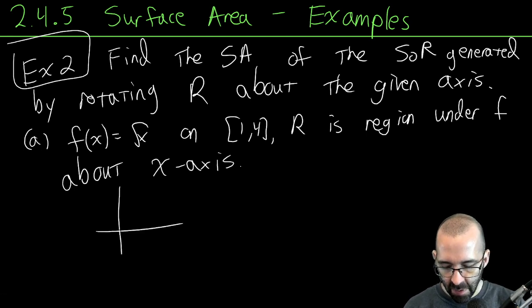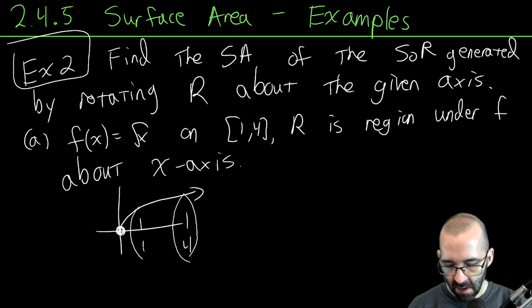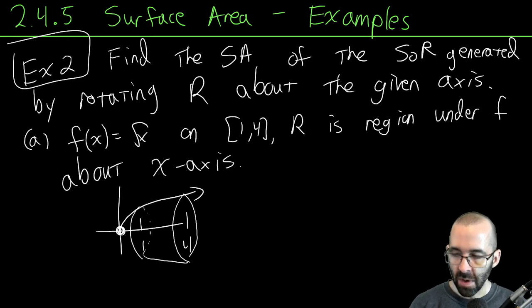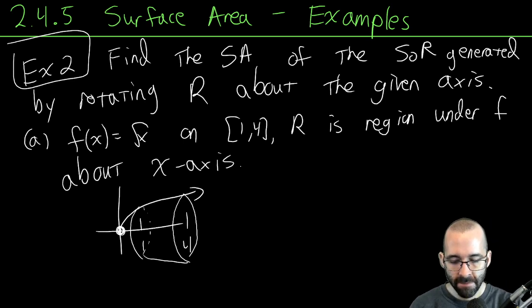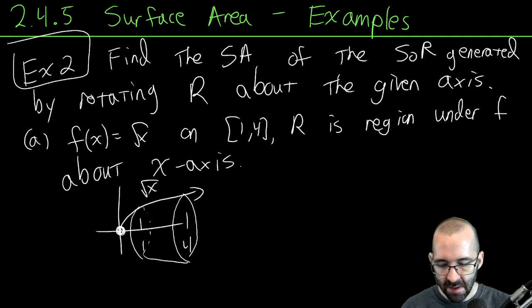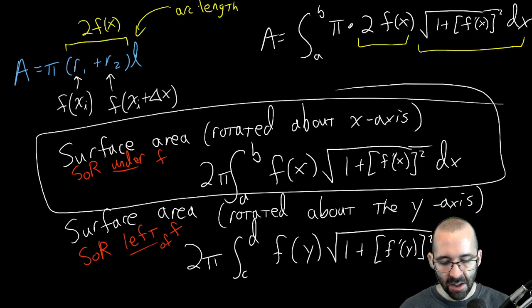Part A: the function f(x) = √x on the interval [1, 4], where R is the region under f, and we rotate about the x-axis. We have the square root function from 1 to 4 rotated about the x-axis. We have this surface and we're trying to find its outer surface area. Since we're rotating about the x-axis, we need everything in terms of x.